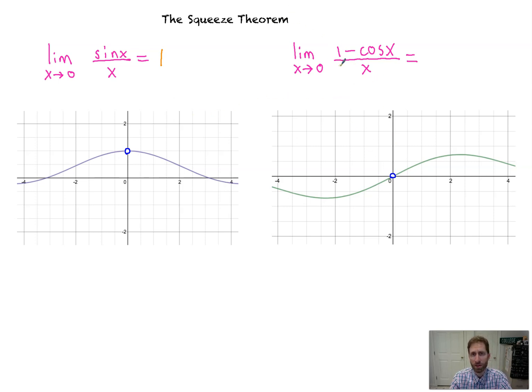Similarly, we can use the squeeze theorem to prove this: one minus cosine x over x. Well, the limit as x goes to zero of that, as we see here, it's going to approach zero. That's it, peeps.